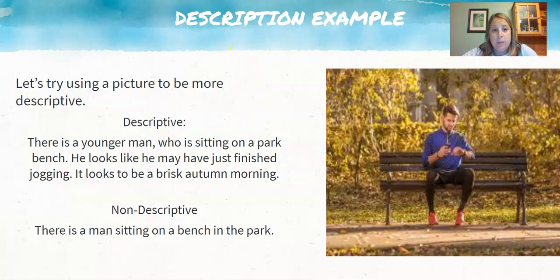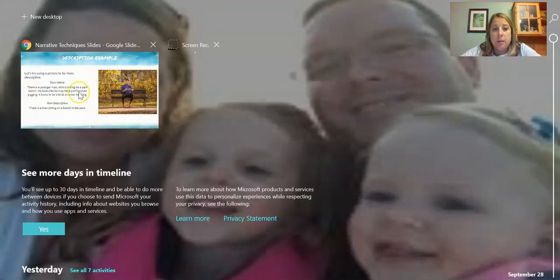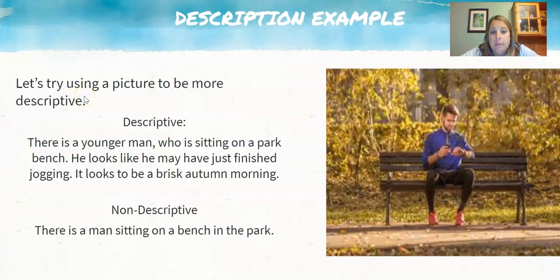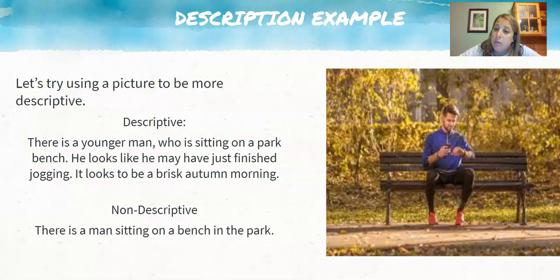Here's another example. Let's use this picture to be a little bit more descriptive. Non-descriptive: I could just say there's a man sitting on a bench in the park. But there's more in that picture than just a man sitting on the park bench. Look at the picture and think about what you might say. When I looked again, I said there is a younger man sitting on a park bench who looks like he may have just finished jogging. It looks to be a brisk autumn morning. Using the five senses to look around the picture already makes the sentence much stronger.